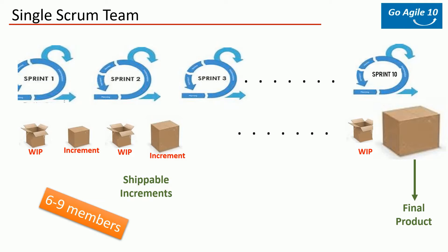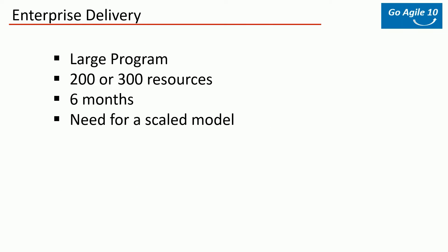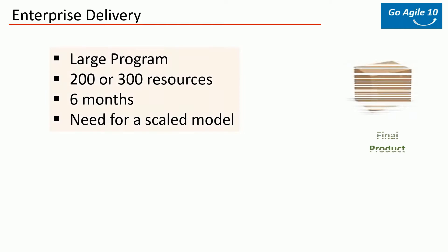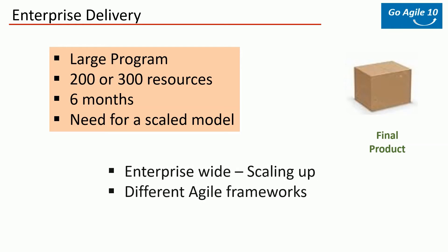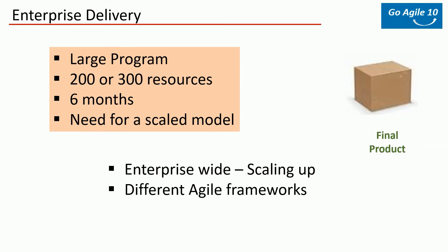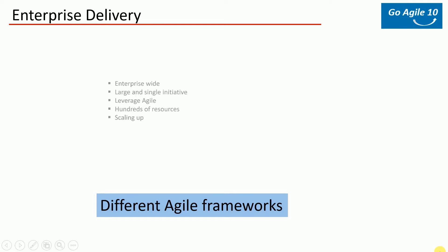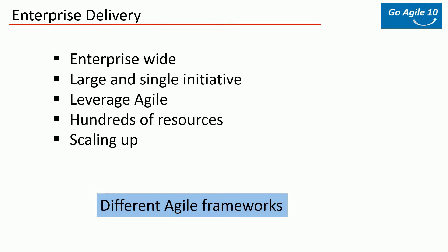Let's say it took 10 sprints, which is 20 weeks, to roll out the full project. In enterprises, that's not how it works. There could be a large initiative requiring 100, 200, or 300 people working simultaneously on the same initiative, but the entire project should be completed in, say, 20 or 30 weeks.